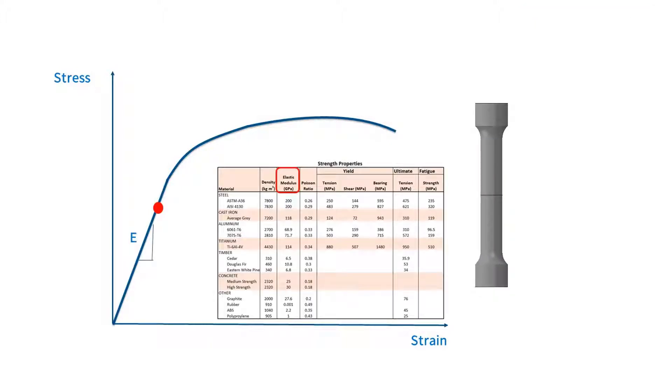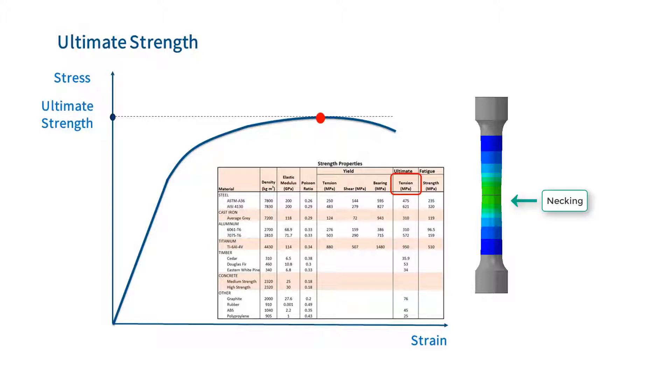The elastic modulus is the slope of this line. For most metals, the yield strength is defined to be the stress level at 0.2% strain offset. The ultimate strength is defined as the stress level where the specimen starts necking down.